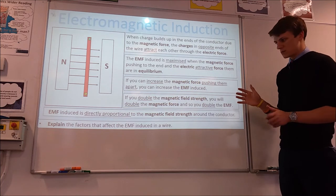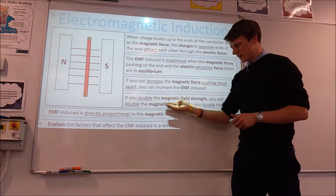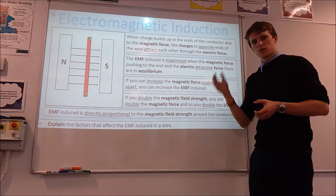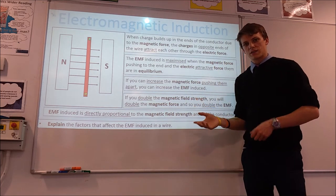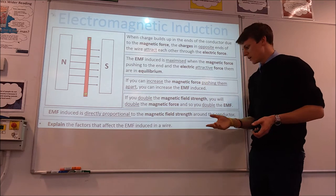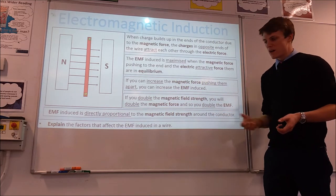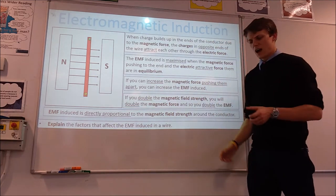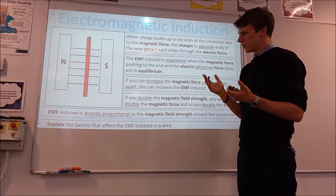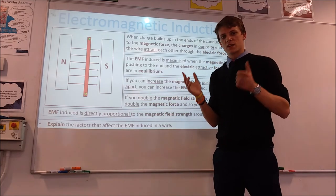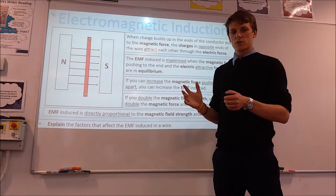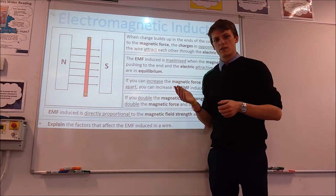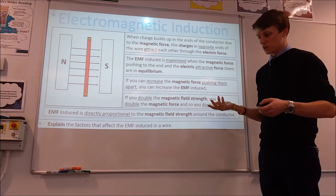Another way to increase the magnetic force is to increase your magnetic field strength. Doubling the magnetic field strength doubles the magnetic force, which doubles the number of charges you can build up, so you get double the EMF. The EMF is therefore directly proportional to the magnetic field strength B. Physically, double the field strength means more flux lines per unit area, so the conductor cuts more flux lines.